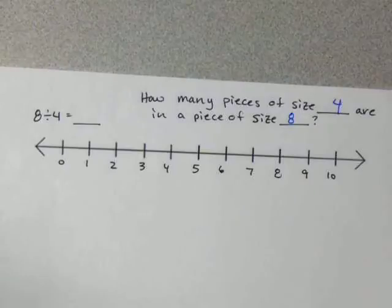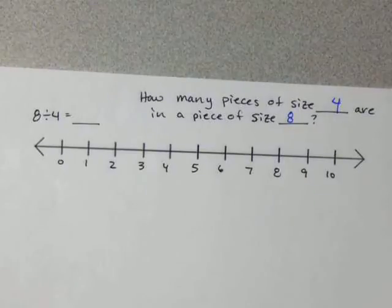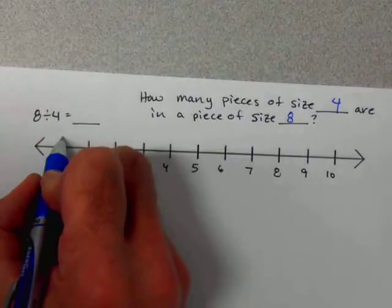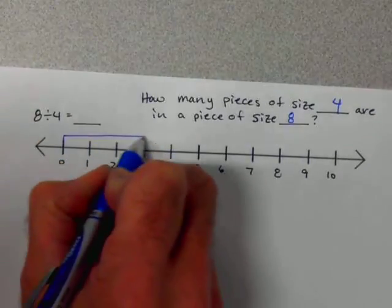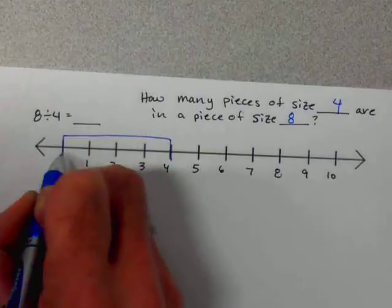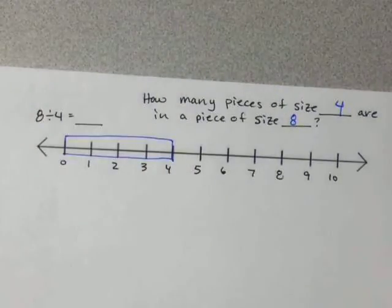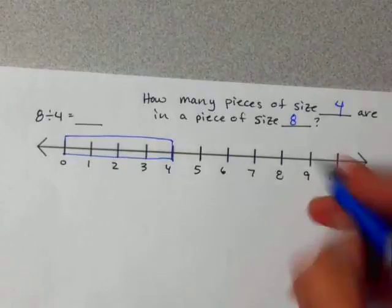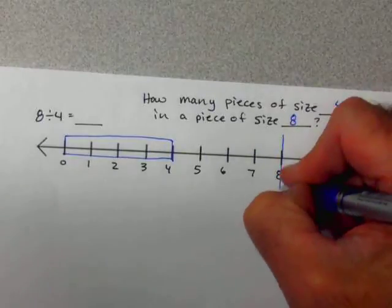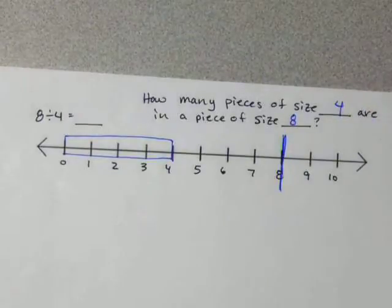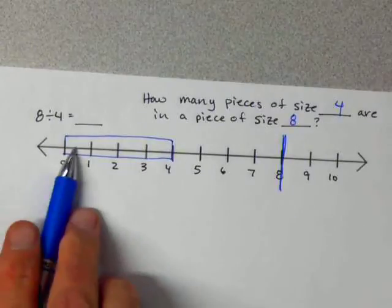I chose this because we already know the result of 8 divided by 4 — we know it's 2 — so we're going to look at it on the number line. First, let's get a piece of size 4. That's what it looks like. We want to know how many of those we can find in a piece that goes all the way to 8. Let's count it: 1, 2, 3, 4 — there's one piece of size 4.